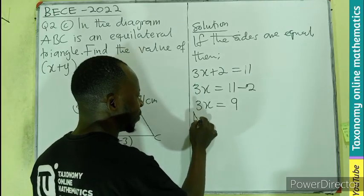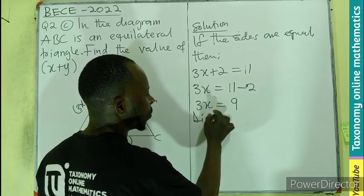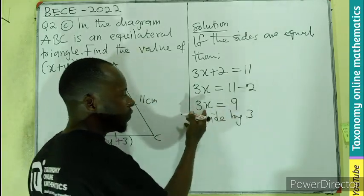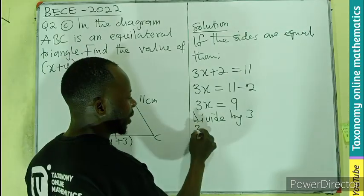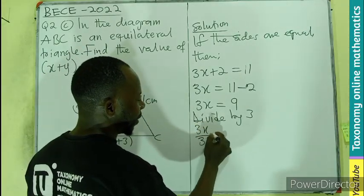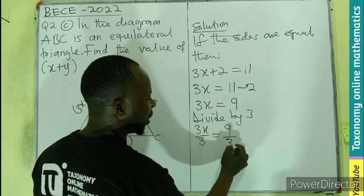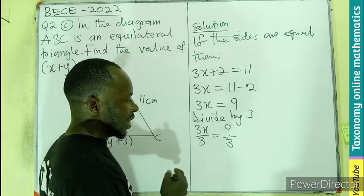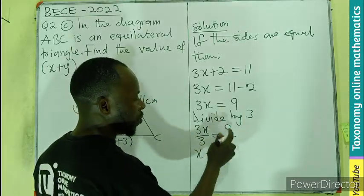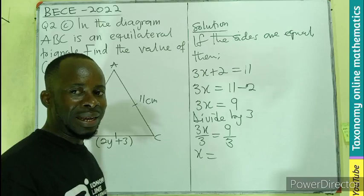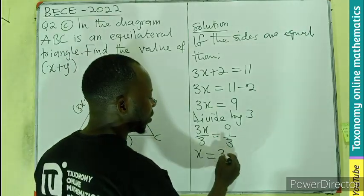So we divide by the coefficient attached to the X. Therefore, 3X divided by 3, the right divided by 3. We know 3 will cancel 3, so X will be equal to 9 divided by 3. And that will give us 3.